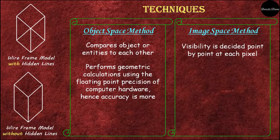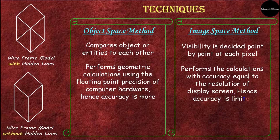The object space method performs geometric calculations using the floating point precision of computer hardware, hence accuracy is more. The image space method performs calculations with accuracy equal to the resolution of the display screen, hence the accuracy is limited because it changes with the resolution of the display screen, and not everyone has the same display resolution.